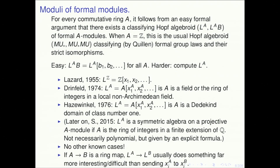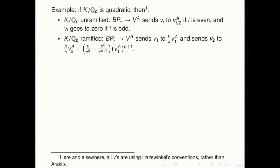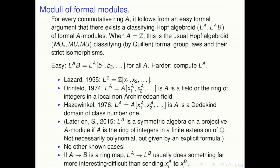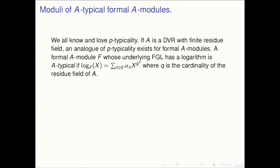One thing worth saying: if you have a ring map from A to B, the induced map of Lazard rings usually does something far weirder than just sending the polynomial generators for L^A to the polynomial generators for L^B. It typically does something much weirder, and that allows room for a really interesting map. Let me show you an example of that.